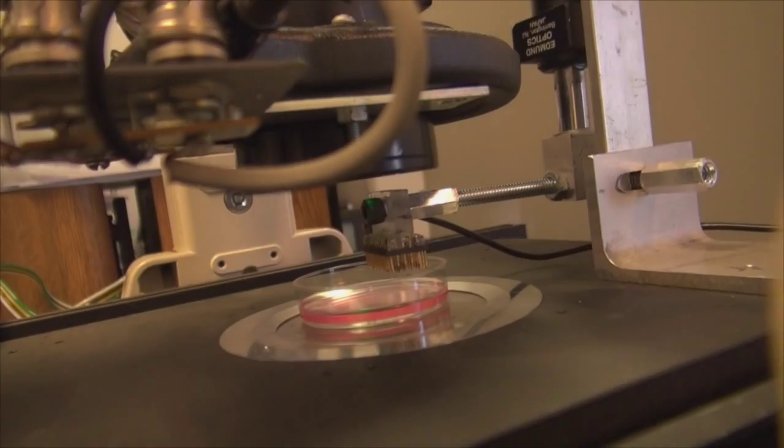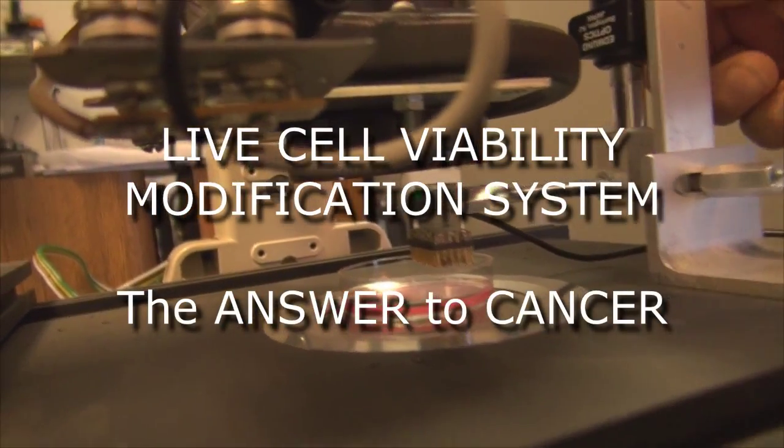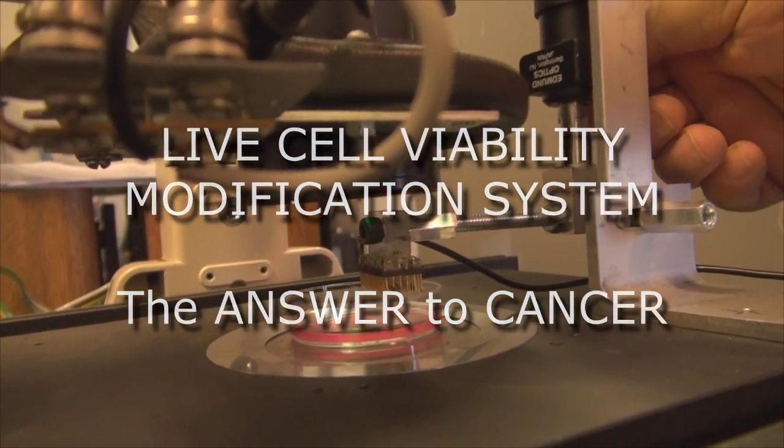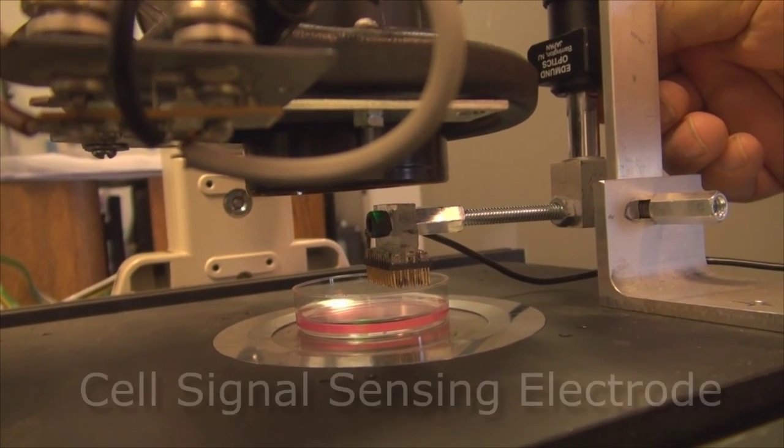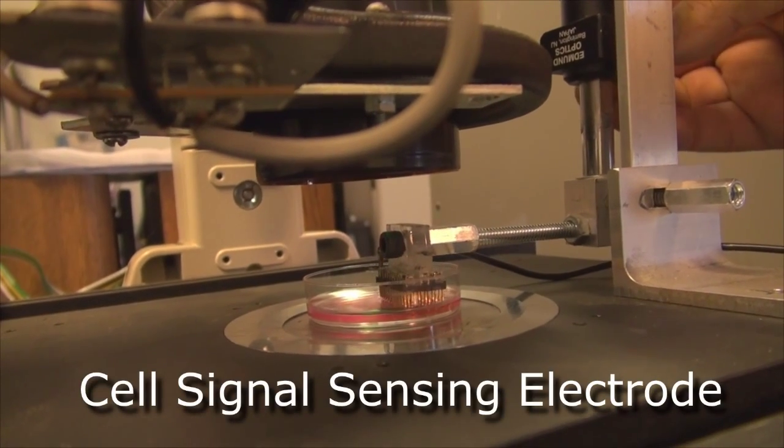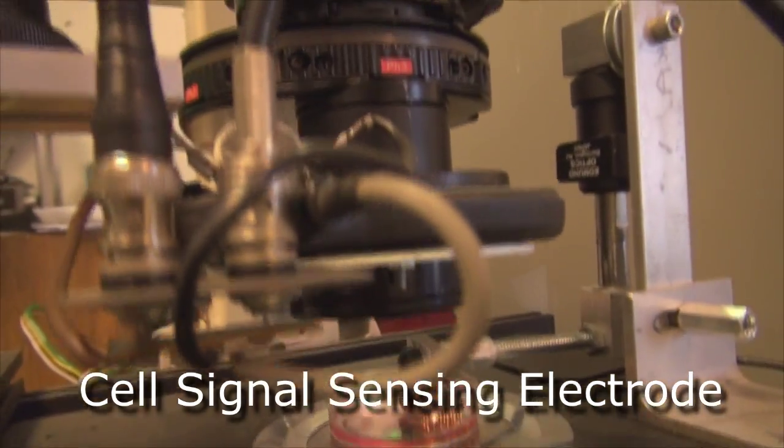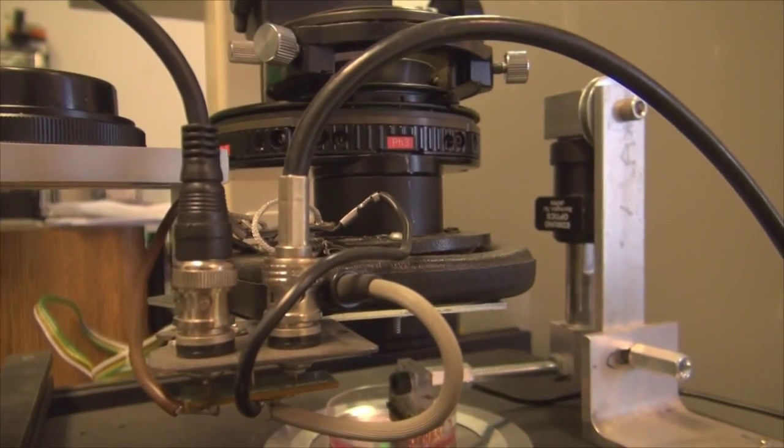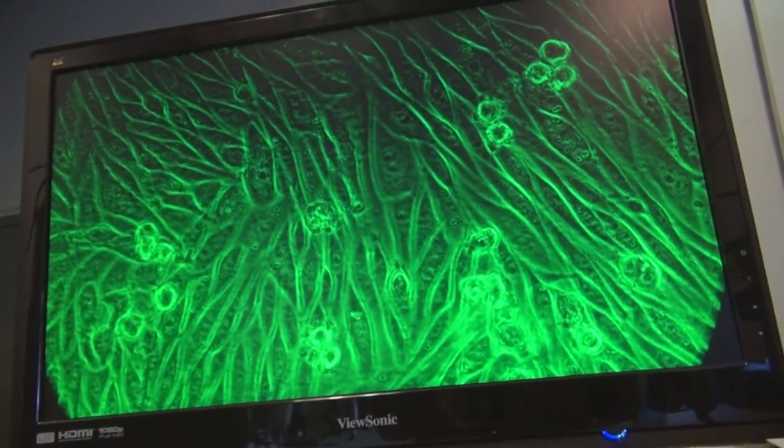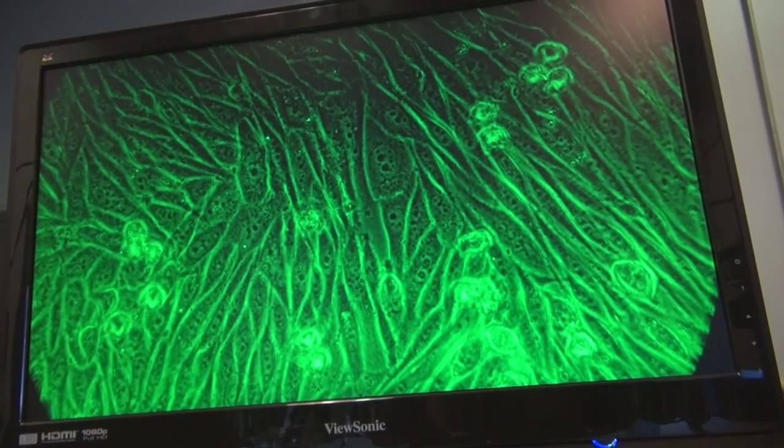Here is a cultured dish where we have grown a population of prostate cancer cells. We lower the cell signal sensing electrode into the dish to make contact with the cells. Above the electrode are the energy radiating coils. You can see on the screen that the cells are thriving and there are very few rounded up dead cells. That is going to change very shortly.